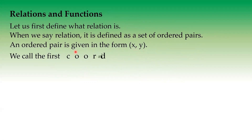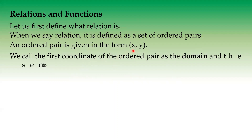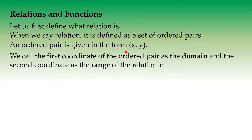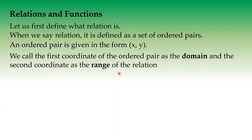We call the first coordinate of this ordered pair as the domain. And the second coordinate is the range of the relation. When we say domain, this is our x values. Then when we say range, it is our y values.